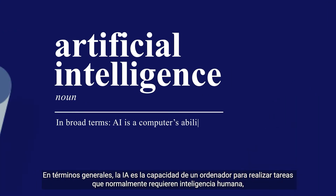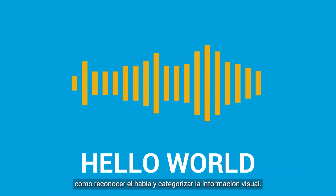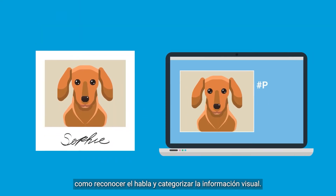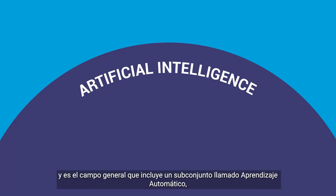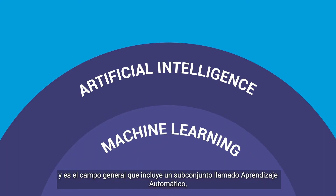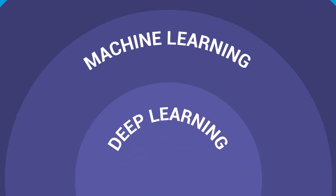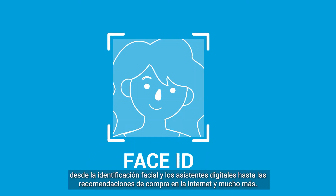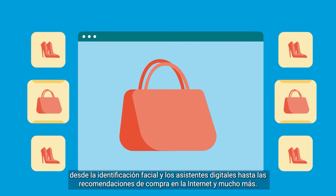In broad terms, AI is a computer's ability to perform tasks that normally require human intelligence, like recognizing speech and categorizing visual information. AI encompasses a much wider range of mechanisms and is the general field that includes a subset called machine learning, which in turn includes deep learning. AI algorithms are all around us, from face ID and digital assistants to online shopping recommendations and so much more.